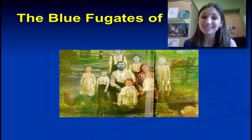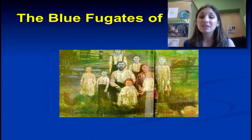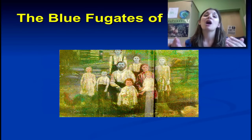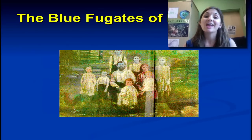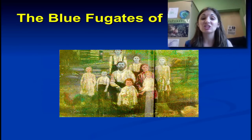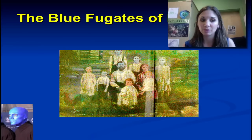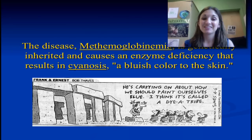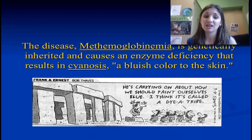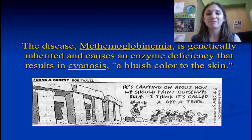Methemoglobinemia is a recessive trait, normally very rare in the population. With inbreeding, because closely related individuals are mating and producing offspring together, if there's a rare trait present in that family, through sexual reproduction that recessive trait — even though it's rare in the population at large — becomes much more pronounced simply because there's less genetic diversity in the population to begin with. The disorder causes an enzyme deficiency which causes a bluish color to the skin, and it became a lot more pervasive in this one group.